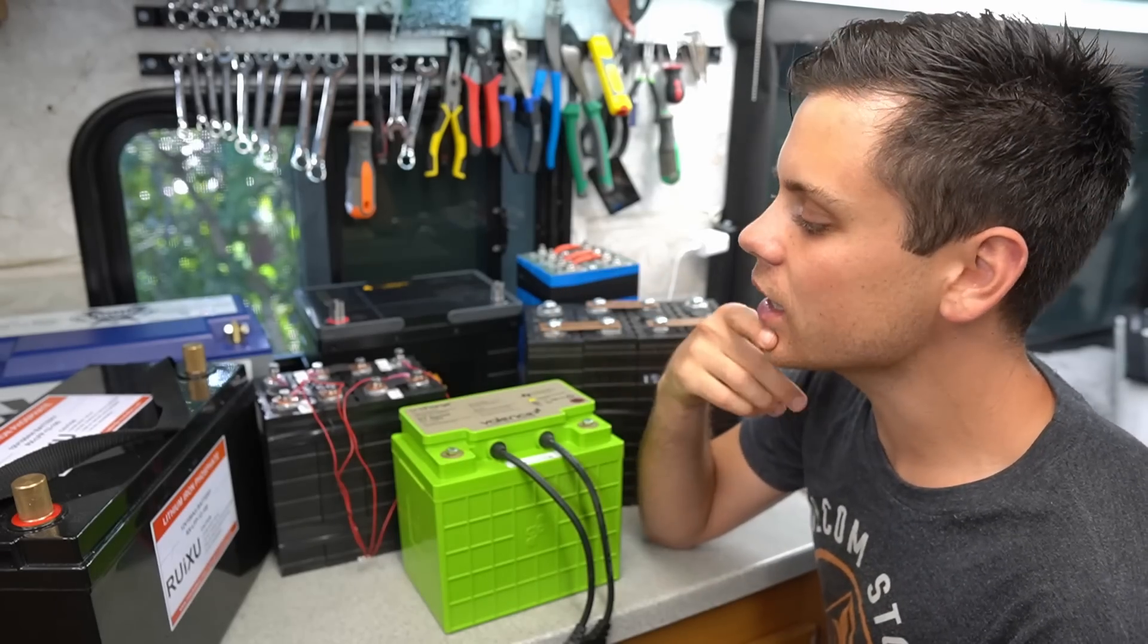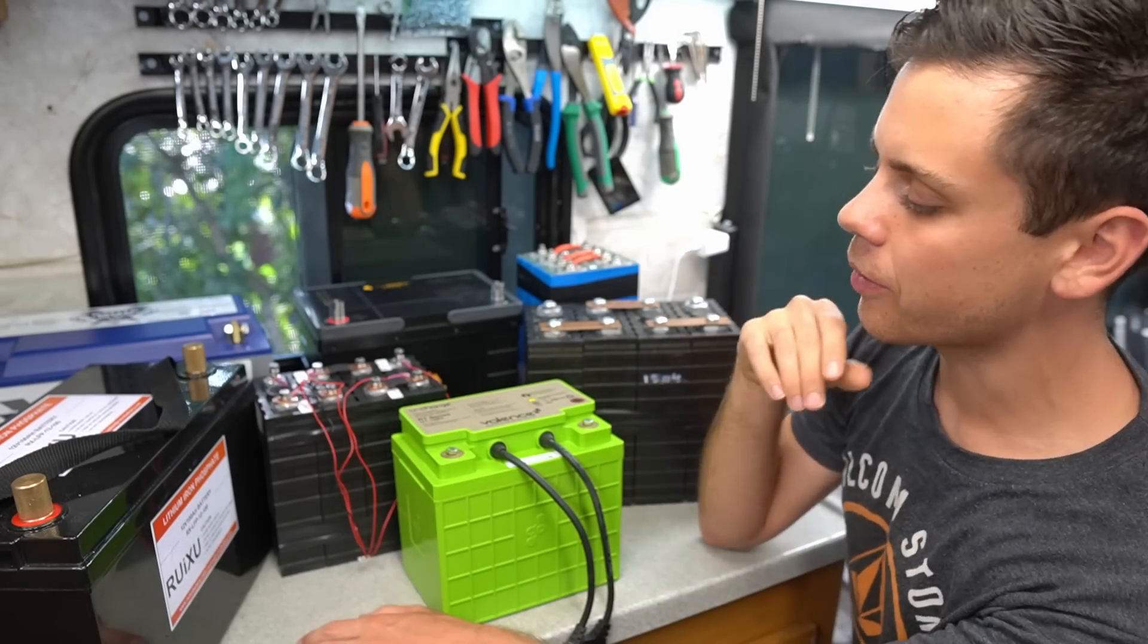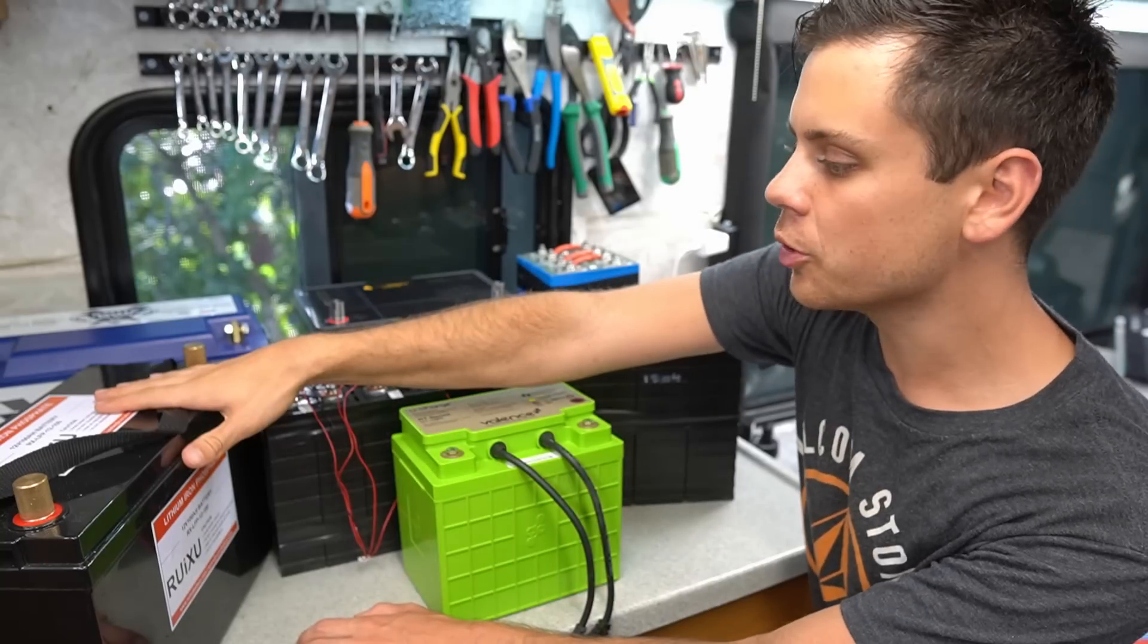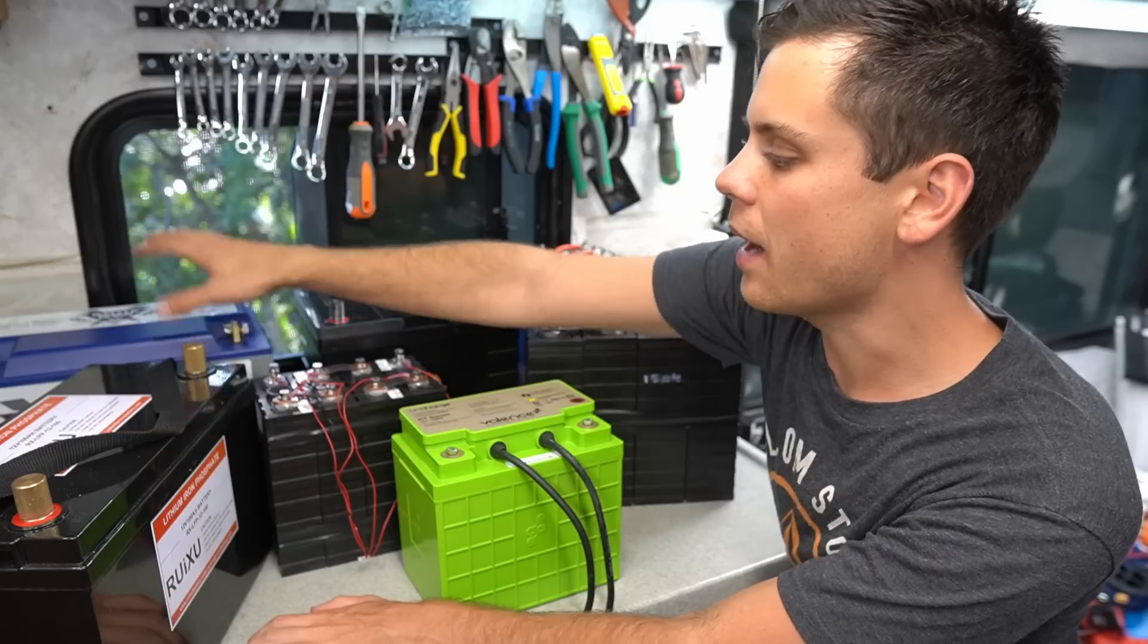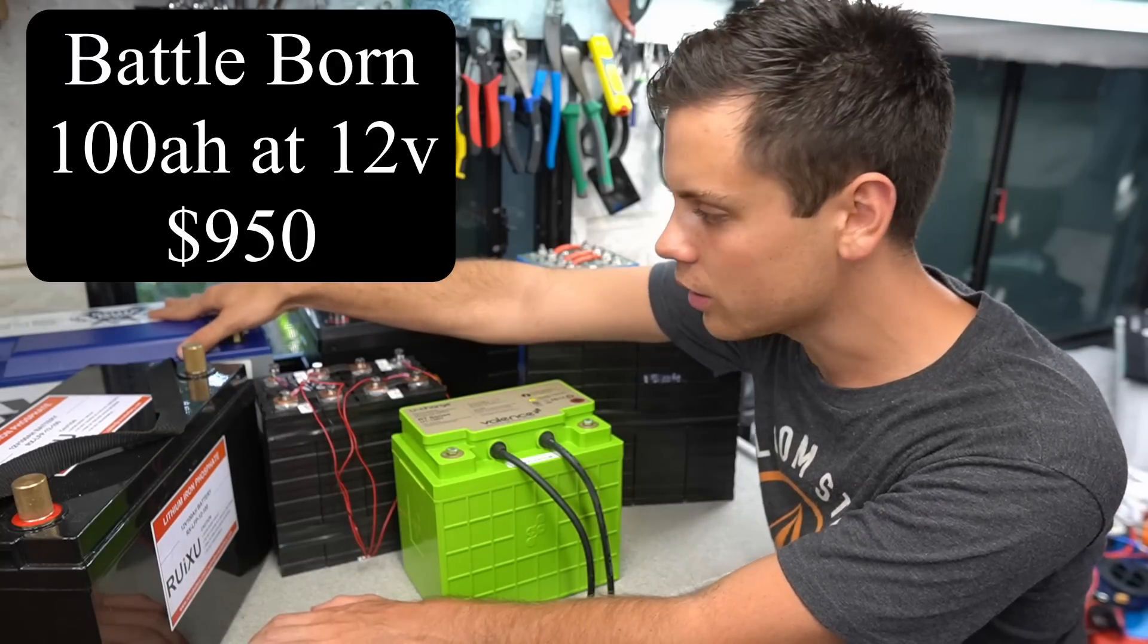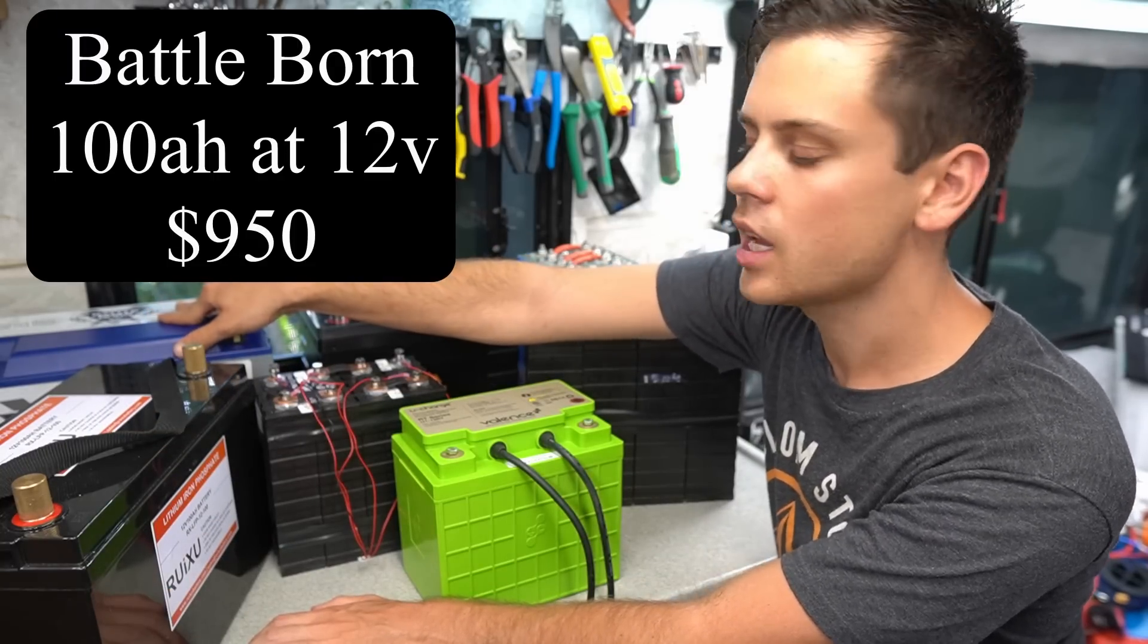Before we test these batteries let's talk a little bit about them. They vary in price quite a lot. The Ruxu is $619 and you get 100 amp hours at 12 volts. The Battleborn is $950, you get 100 amp hours at 12 volts.